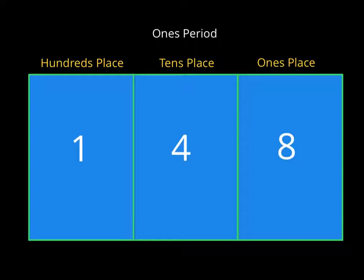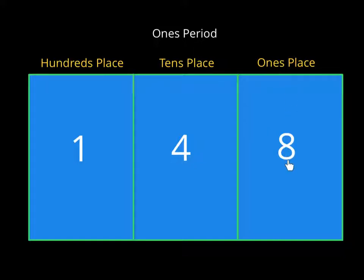Let's take the number 148 and break it apart into the three different places that we have in the ones period. The digit 1 in the hundreds place stands for 100. The 4 in the tens place stands for 40. And the digit 8 in the ones place stands for 8.